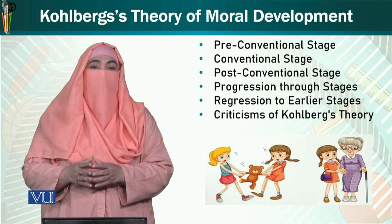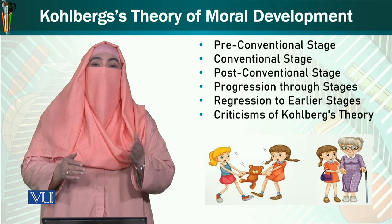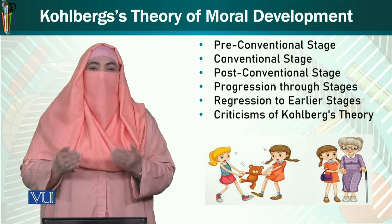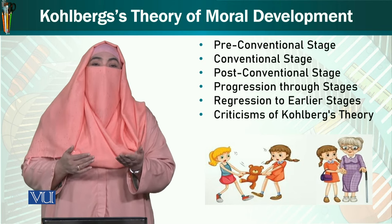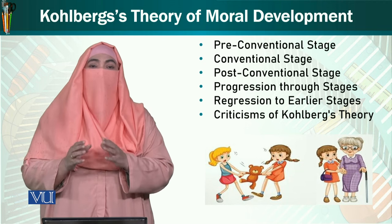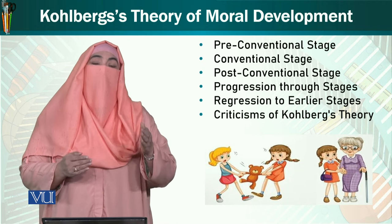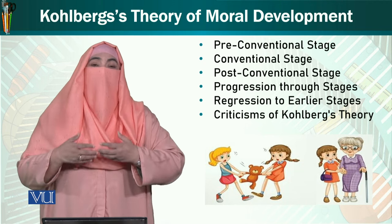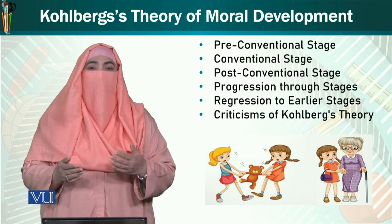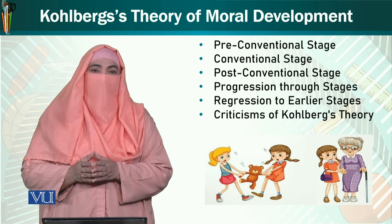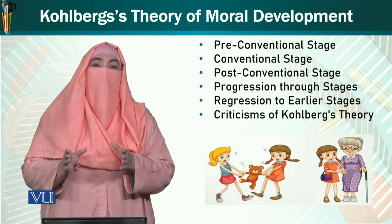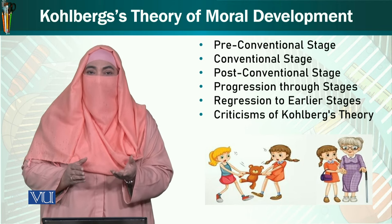اس کے بعد دوسرا مرحلہ conventional stage ہے. یہ سات سال کی عمر کے بعد شروع ہوتا ہے جب بچے کچھ concrete thoughts بنانے لگتے ہیں. بچے سمجھ جاتے ہیں کہ ان کے اردگرد کے لوگوں کے norms کیا ہیں — والدین، اساتذہ، دوستوں کی کیا اہمیت ہے. پھر وہ دیکھتا ہے کہ ملکوں اور اداروں میں قوانین ہیں اور اچھے برے کا معیار عدالتوں، قانون، اور آئین نے بنا رکھا ہے. چوری کرنا اس لیے بری بات ہے کیونکہ قانونی طور پر یہ جرم ہے — وہ قوانین پر پابندی کو اخلاقیات سمجھتا ہے۔